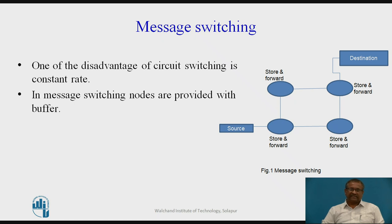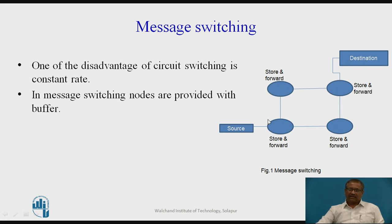We therefore go for message switching. This is a message switching network which consists of nodes — different nodes which have a store-and-forward facility. Whatever message is coming is stored and then forwarded to the next node until it reaches the destination. In earlier circuit switching, nodes were only dumb nodes without storing facility; here storing facility is added to remove the drawback of circuit switching.